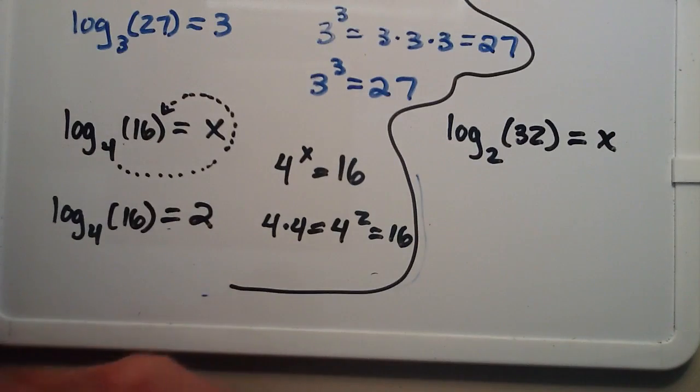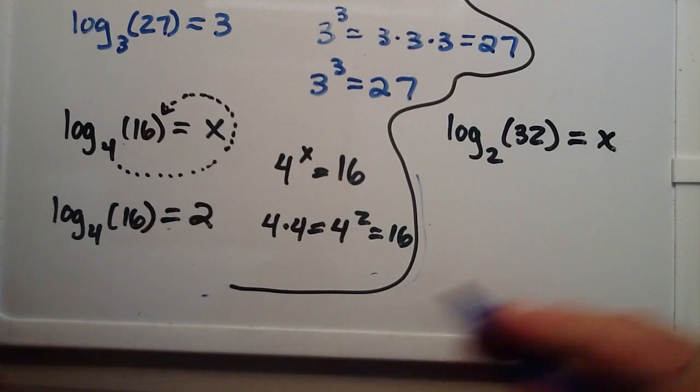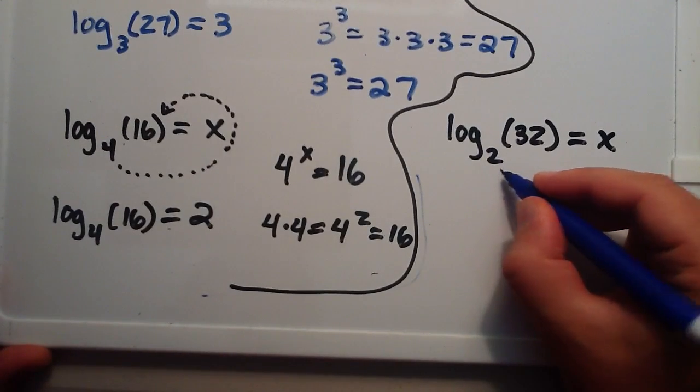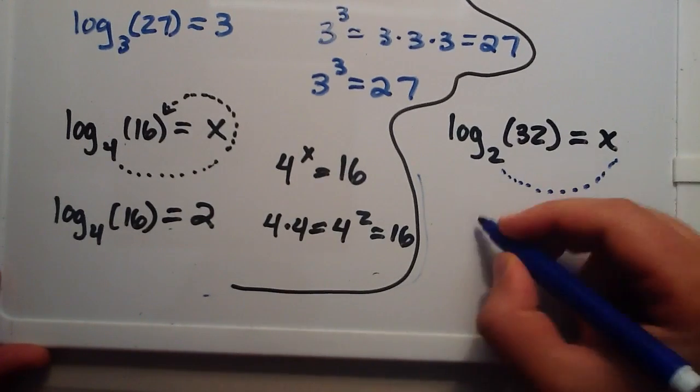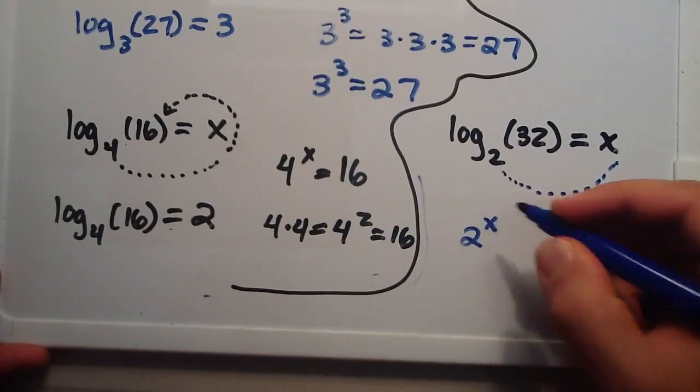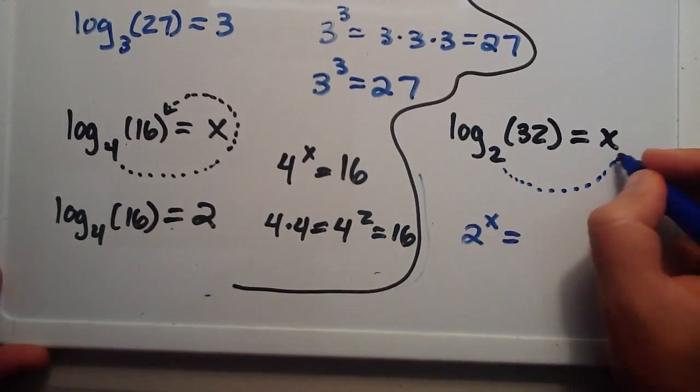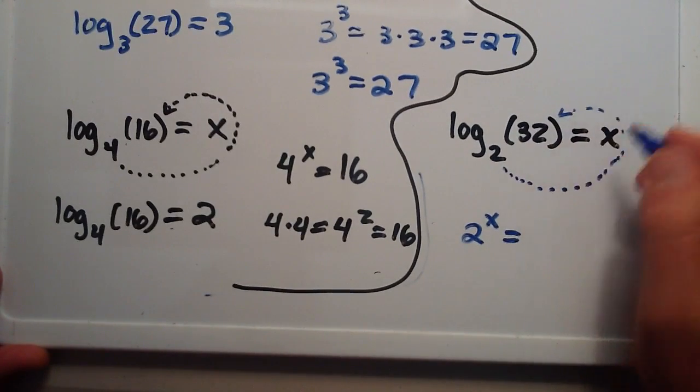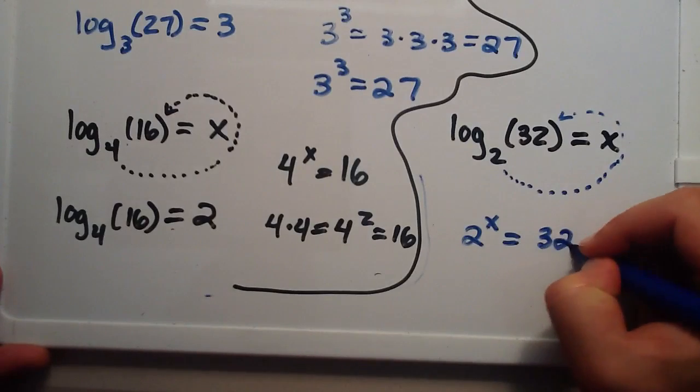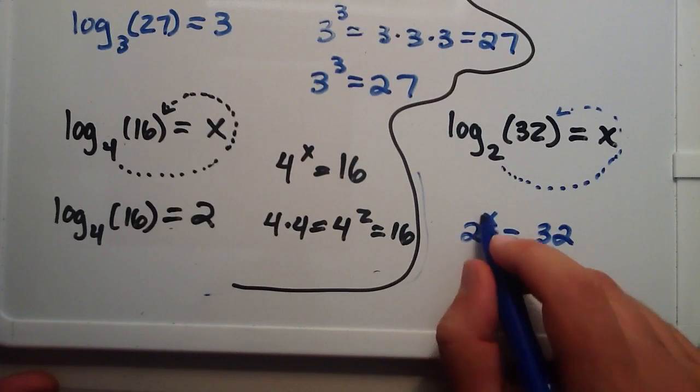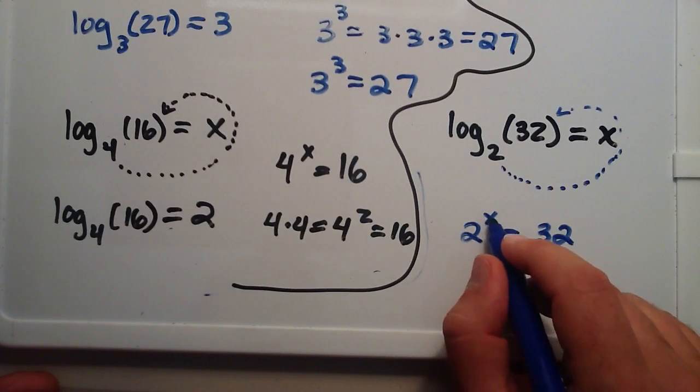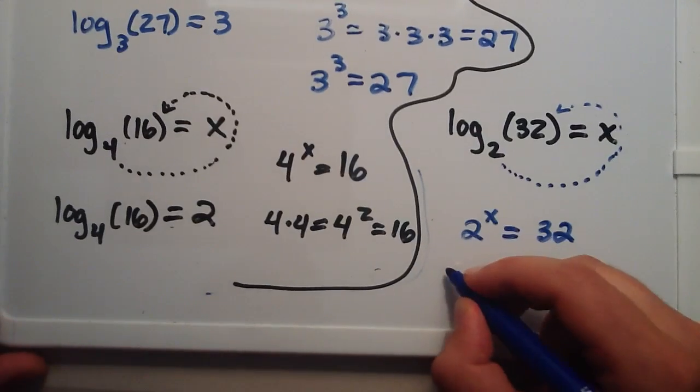So we're going to draw the scorpion tail again, starting at the base 2. 2 raised to the x power, 2 to the x is equal to 32. So 2 multiplied by itself how many times x times equals 32?